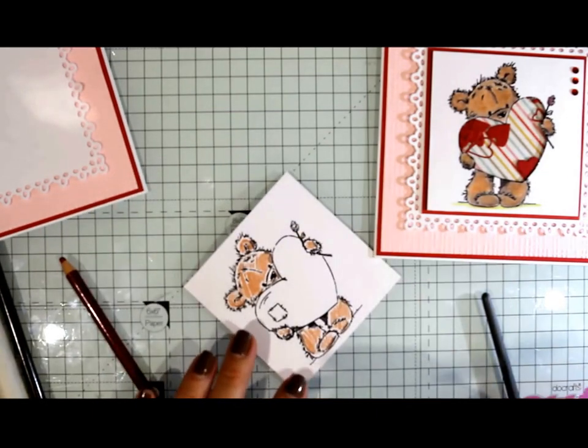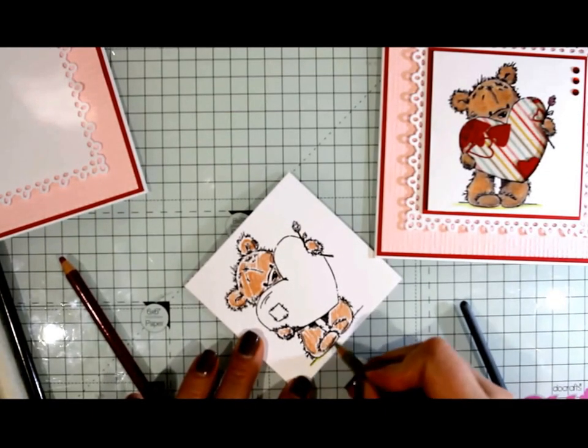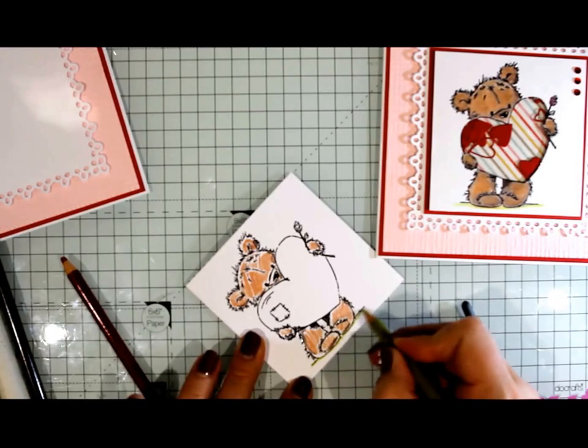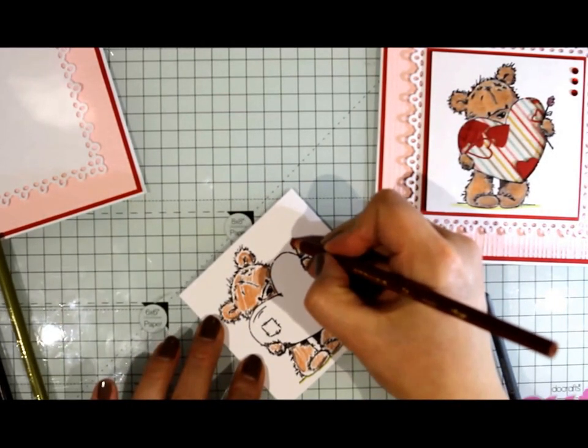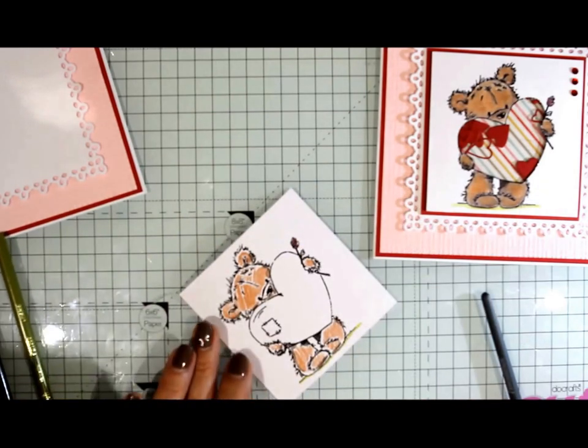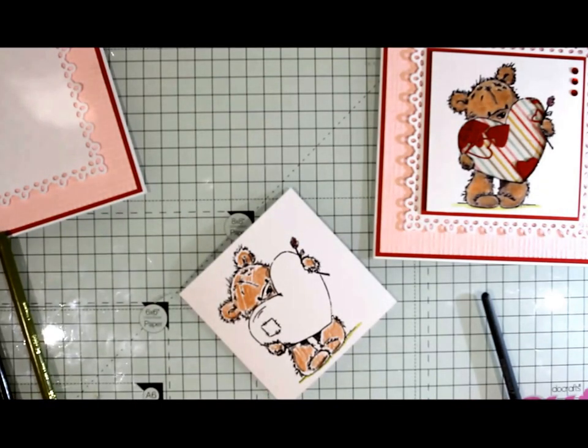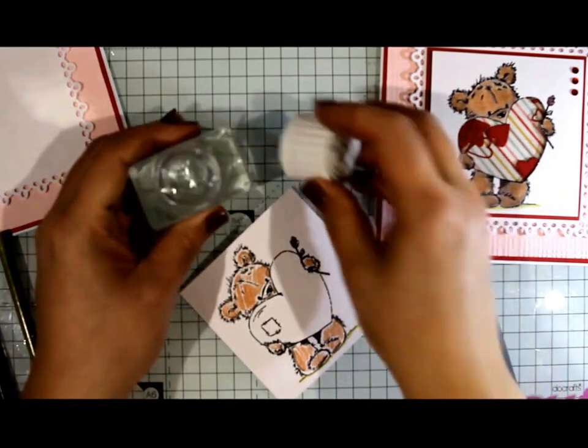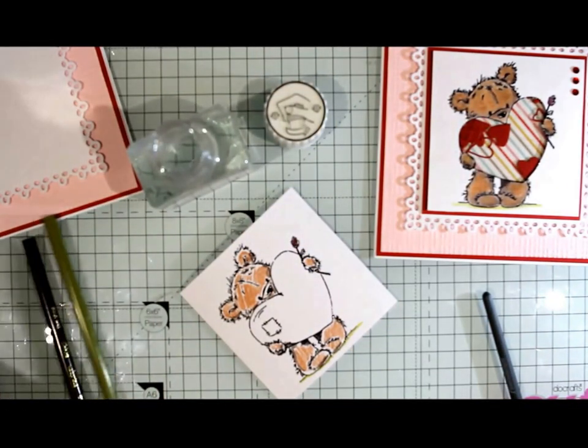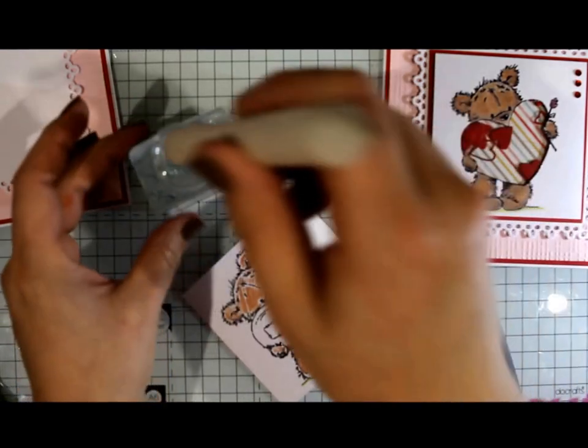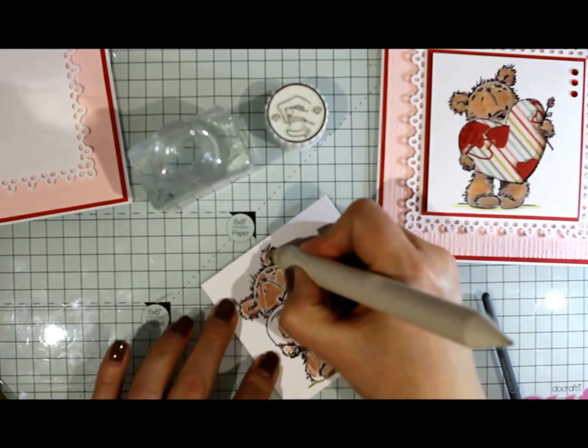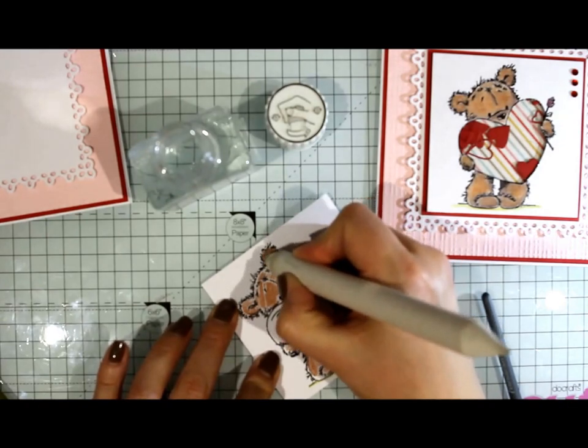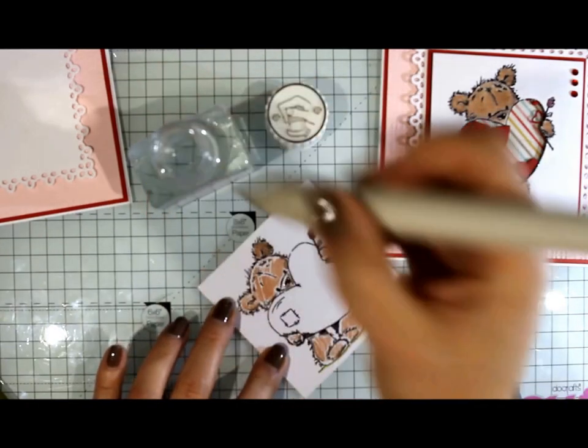Adding some darker brown where you want the shading to be. Again, I'm not taking any time at all to do this. We're going to blend it all out in a minute and it comes together really well. And lastly, adding a tiny bit of green under his feet for the ground. Oh, almost forgot. We need some red for the rose.